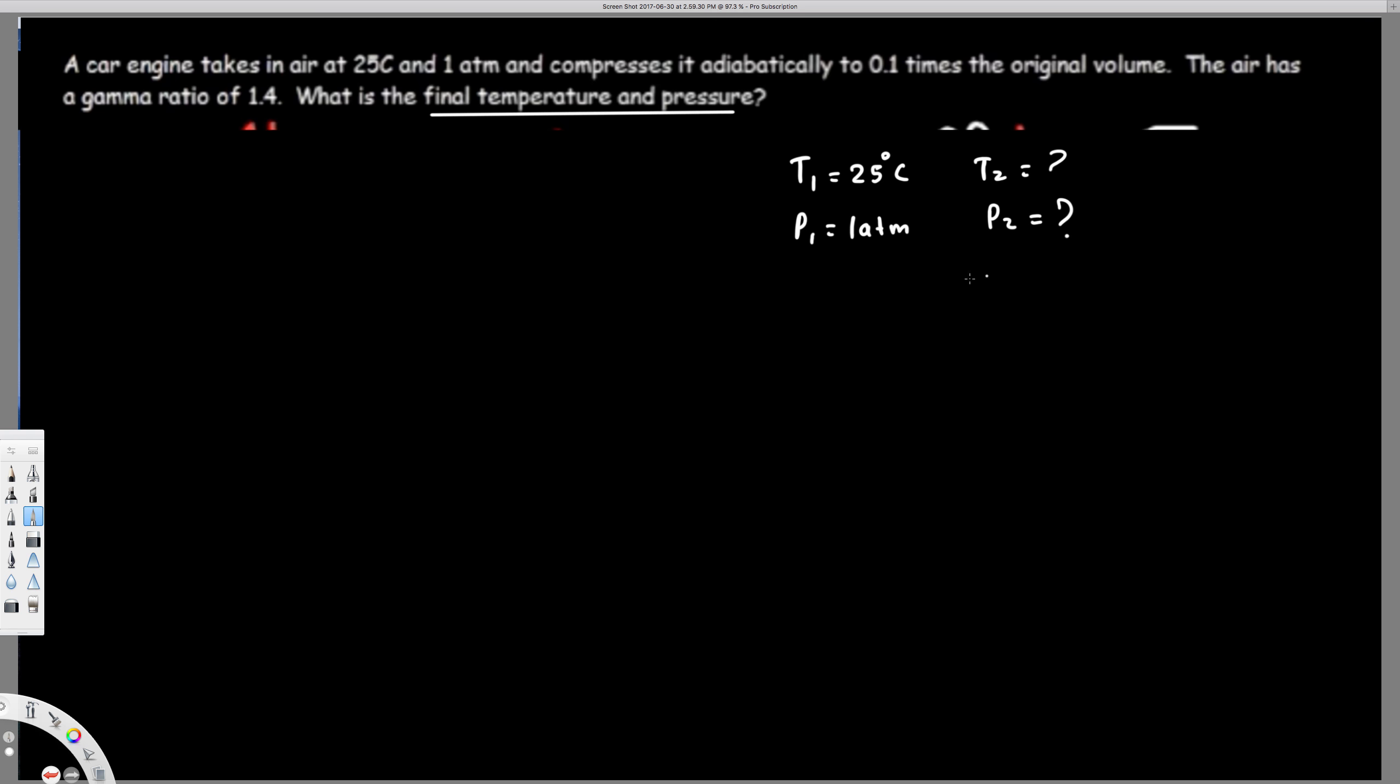These two are what we're trying to find. And then what else we have? We have this information: whatever the value, V2 is going to be 0.1 times the first volume. So if V1 is equal to, for example, one liter, this is going to be 0.1 liter, right?